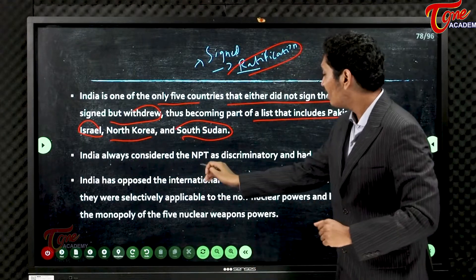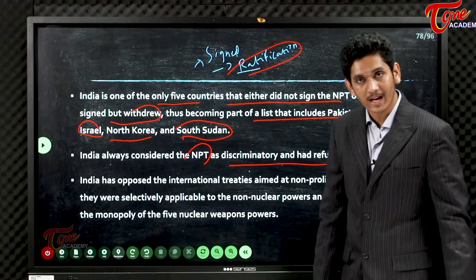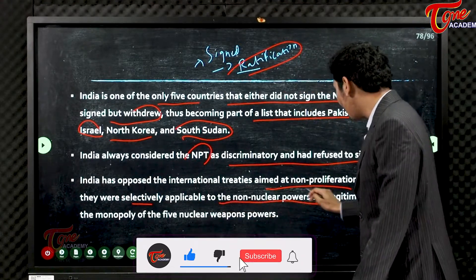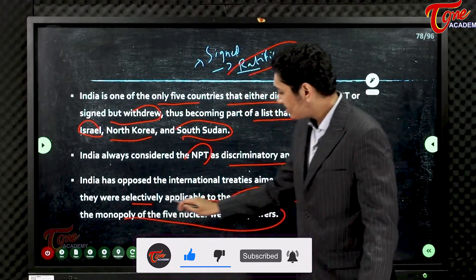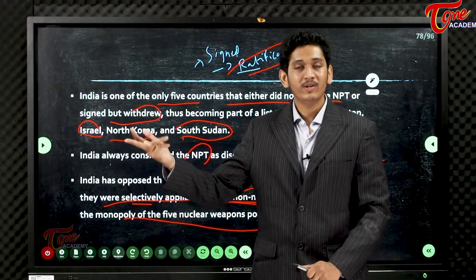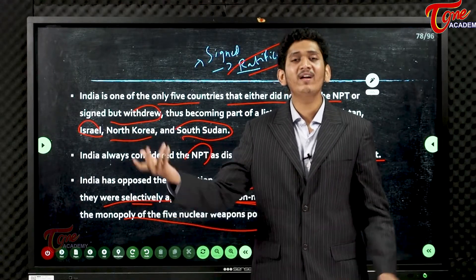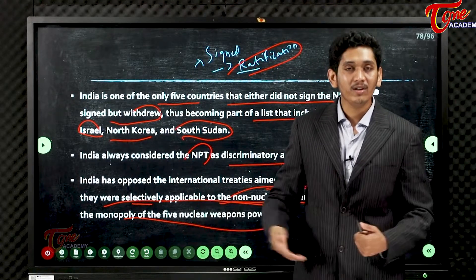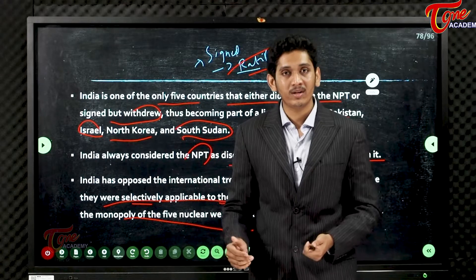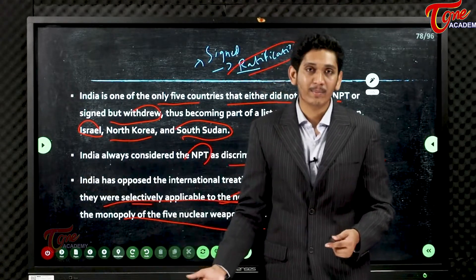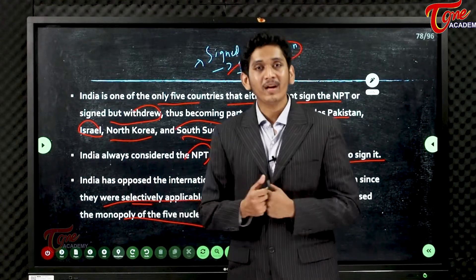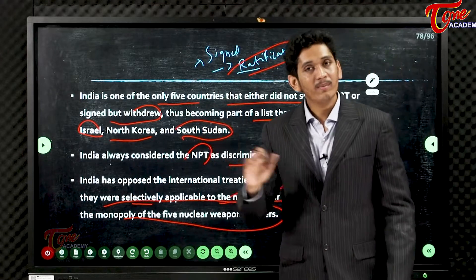India always considers that the non-proliferation treaty is discriminatory and has refused to sign it. India has opposed international treaties aimed at non-proliferation since they were selectively applicable to non-nuclear powers and legitimized the monopoly of five nuclear weapons states — China, US, Russia, France, and UK — who had the right to retain their weapons while non-nuclear states were denied the same technology.